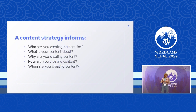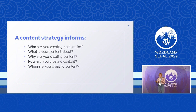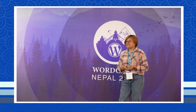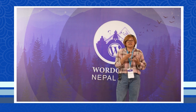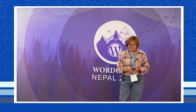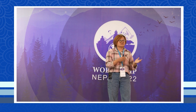A content marketing strategy informs: who are you creating the content for? What is your content about? Why are you creating the content? How, where, and when? So it seems content marketing strategy is really important if you want to succeed with content marketing — but how do you create a winning content marketing strategy that actually works?